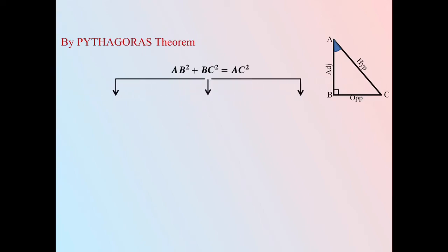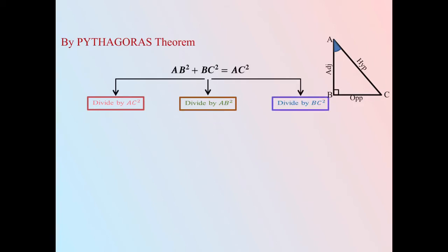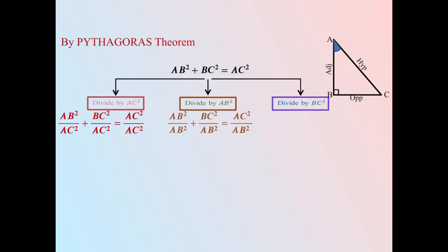First we divide the entire equation by AC², then by AB², and then by BC². On dividing the equation by AC² we get AB² / AC² + BC² / AC² = AC² / AC², which equals 1.